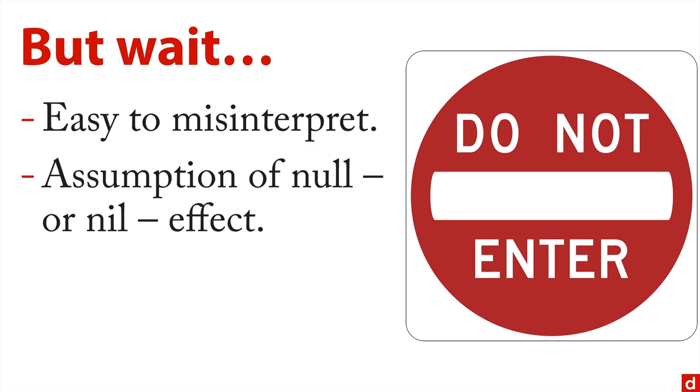Also, a lot of people take exception with the assumption of a null or nil effect - that there's zero difference at all. In certain situations, that could be an absurd claim, so watch out for that. There's also bias from the use of a cutoff. Anytime you have a cutoff, you'll have problems where cases that are just slightly higher or lower would have switched the dichotomous outcome. That is a problem.